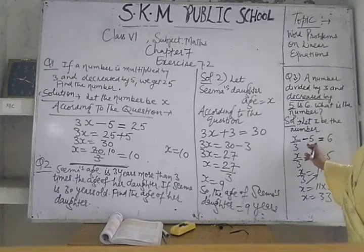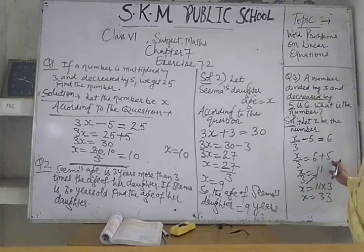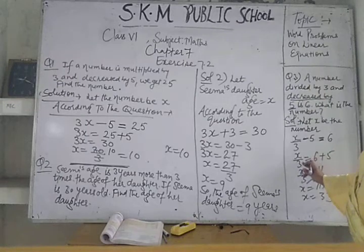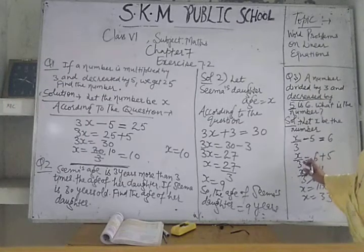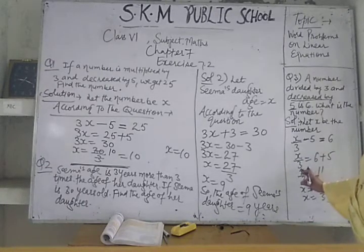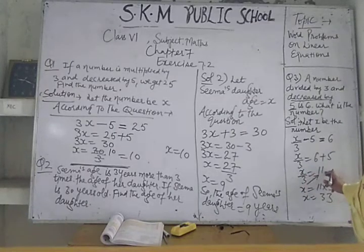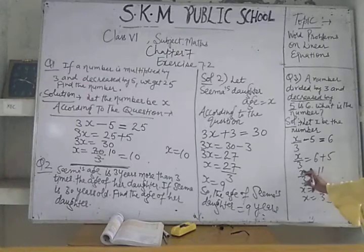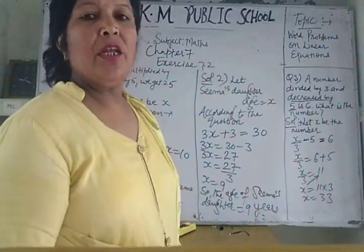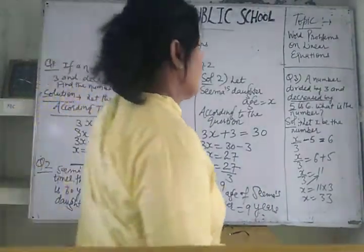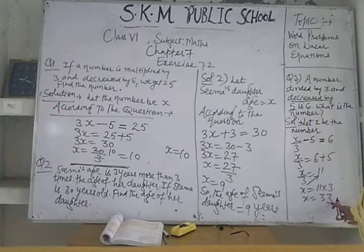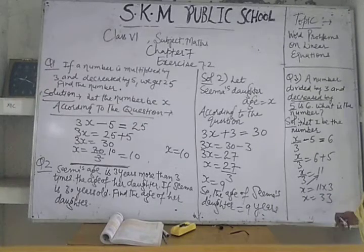Solve this equation by transposition method. Minus 5 goes to the right-hand side as plus 5: 6 plus 5 equals 11. x is divided by 3 here, so by transposing, division converts to multiplication on the other side. So 11 into 3: x is equal to 33. The number is x equals 33.